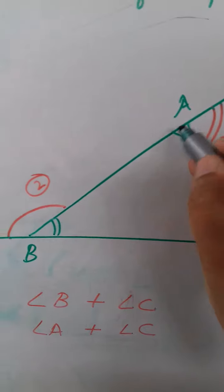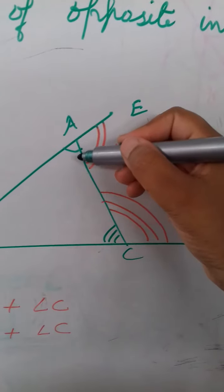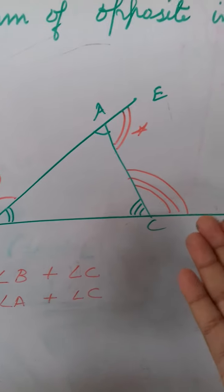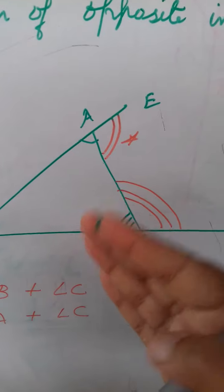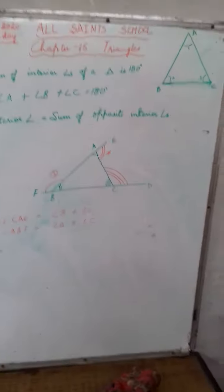Similarly ABF, can you see ABF. This is equal to angle A plus angle C. Interior opposite, sum of opposite interior angles. I hope these two concepts are clear to you.